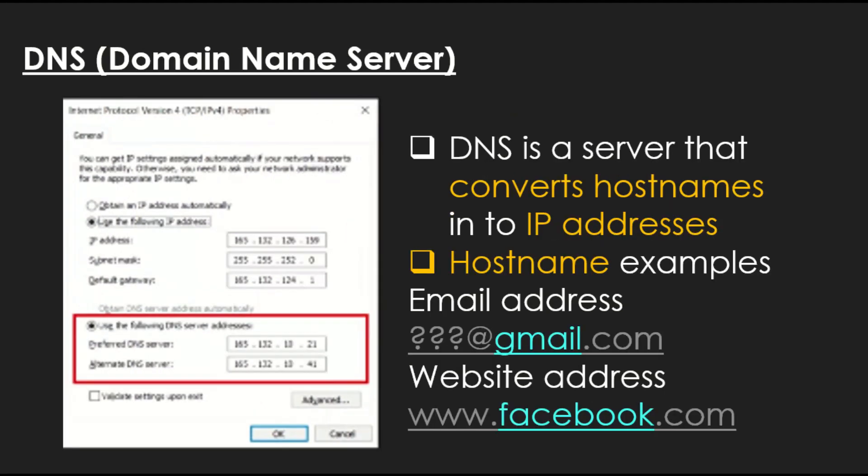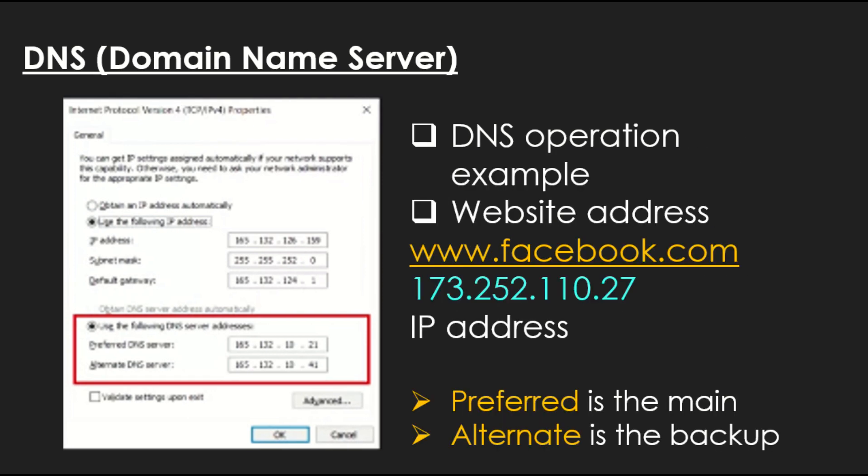In the window you can see it uses the following DNS server addresses: a preferred DNS server and an alternate DNS server IP address. DNS stands for Domain Name Server — it's a server that converts host names into IP addresses. For example, if you use Gmail, the gmail.com part is the host name. For a website like www.facebook.com, the facebook.com is the host name. DNS converts www.facebook.com into an IP address, which we need in order to route the packet to the server so it can respond with the information we want. The preferred DNS server is the main one and the alternate DNS server is the backup — both support your connectivity by converting domain names into IP addresses.